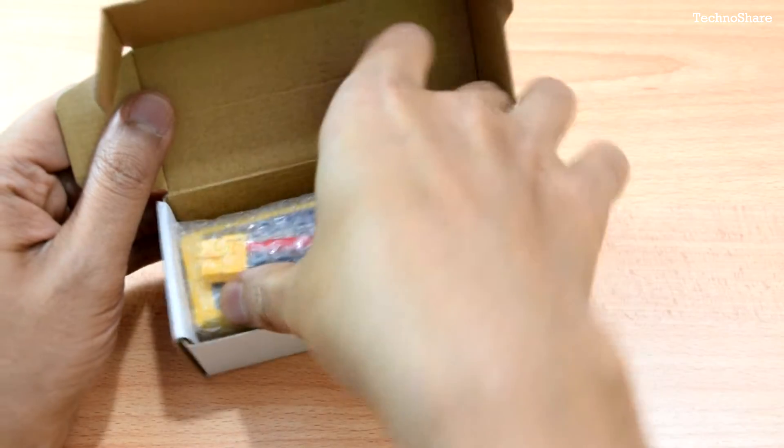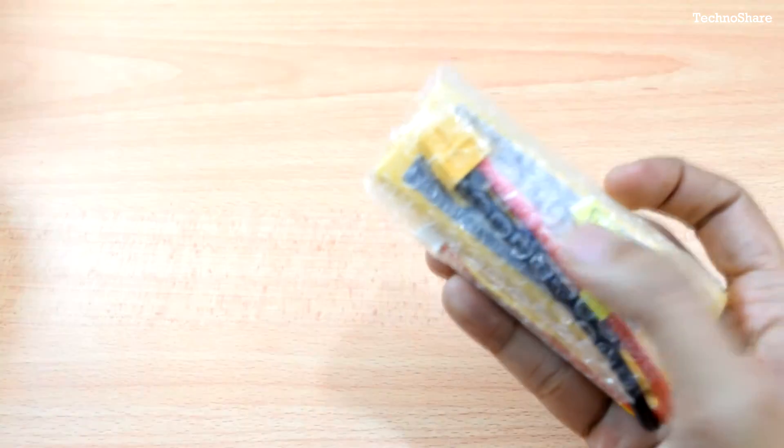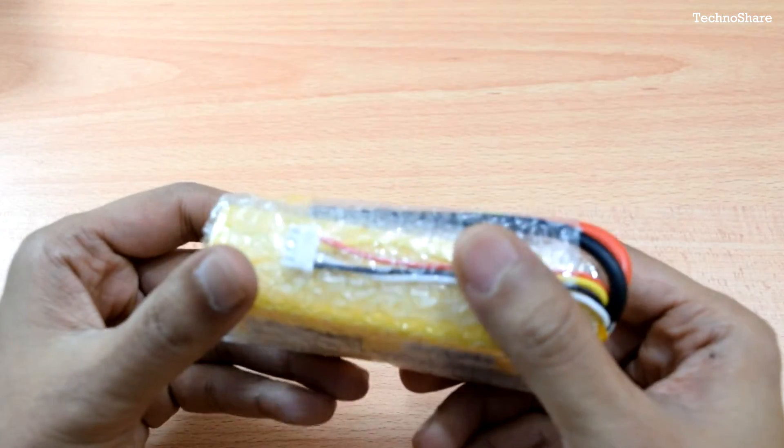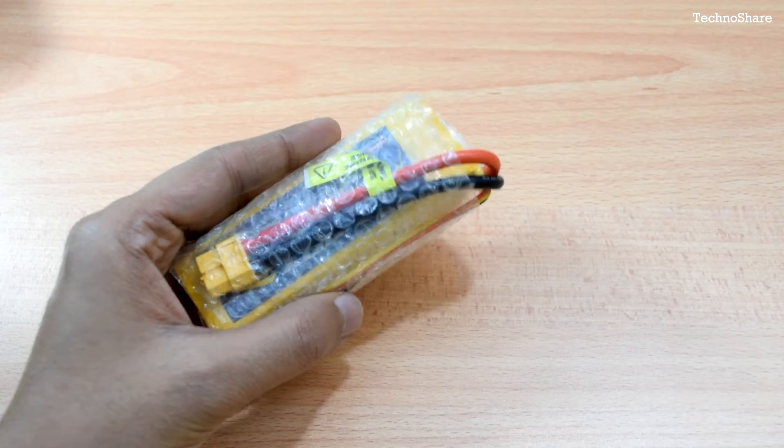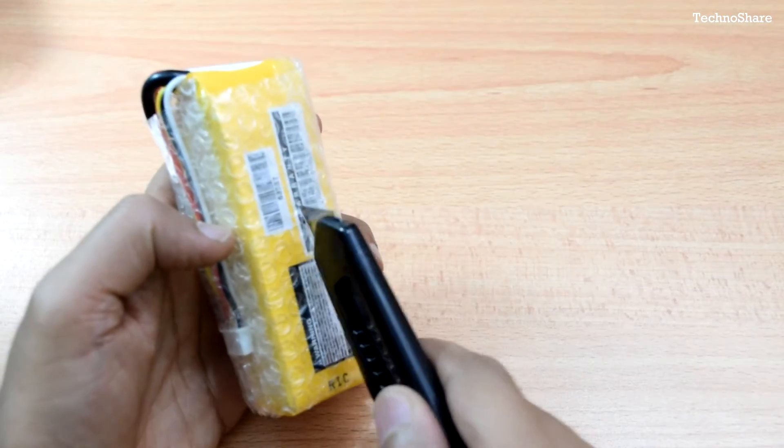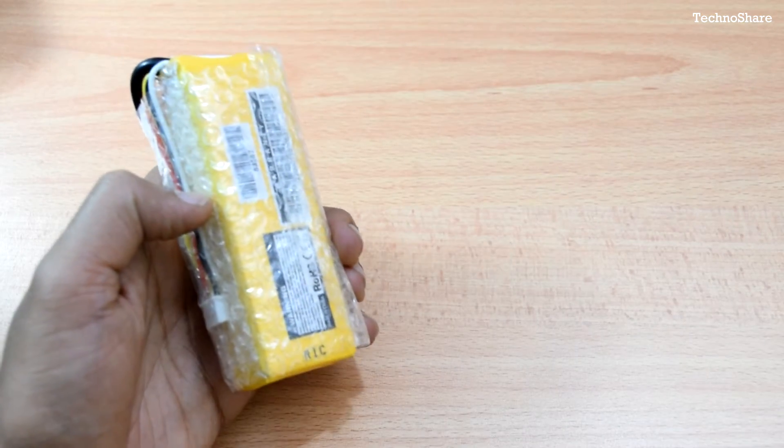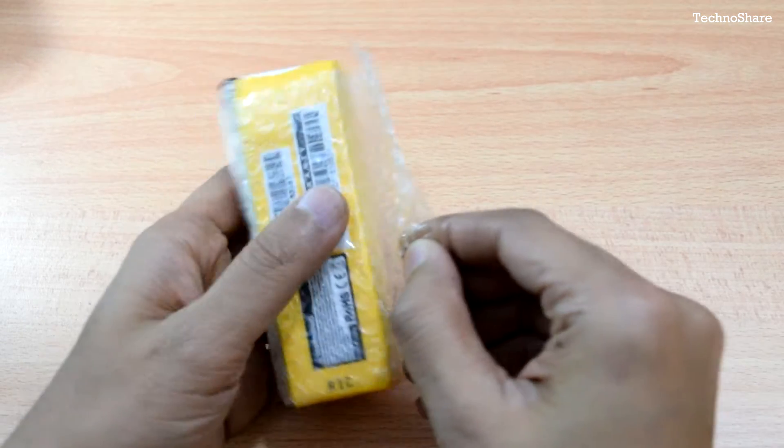And then we get the battery itself. This weighs about 196 grams including the cables and the connectors. It is a 3 cell battery rated about 2200 mAh and its capacity is around 40c.